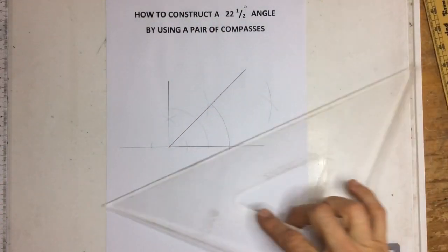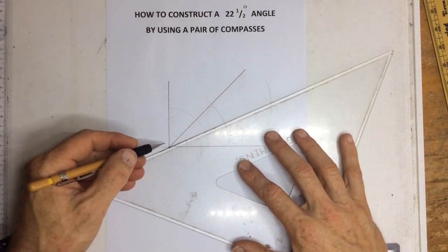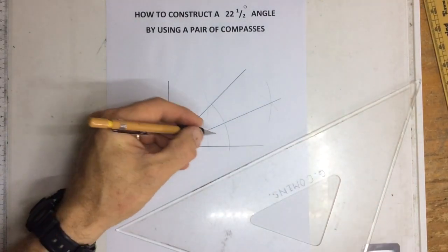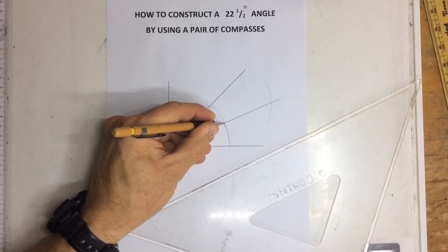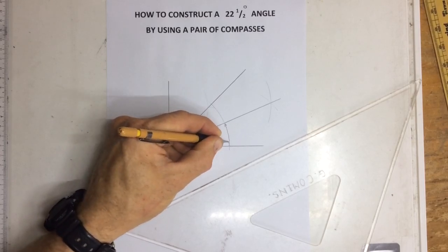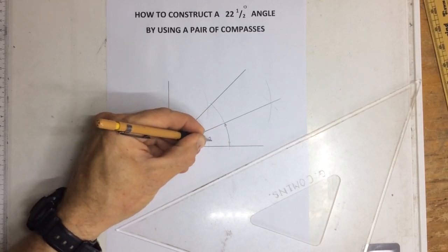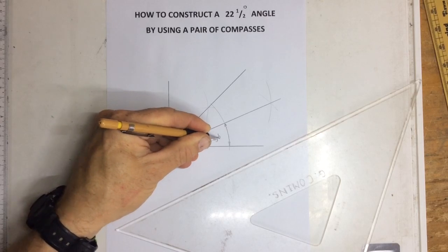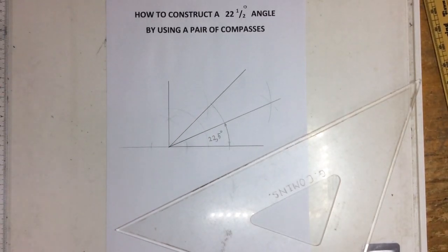And by joining the corner over here, up with those arcs over there, I have drawn a 22 and a half degree angle. That's it.